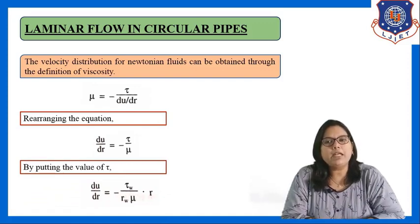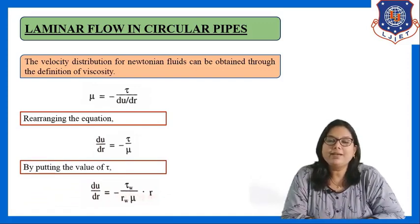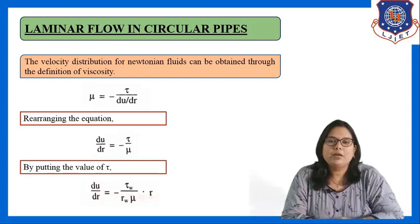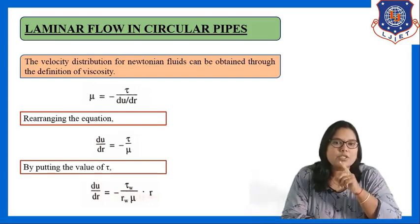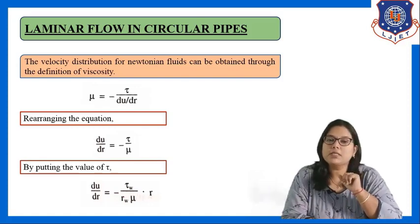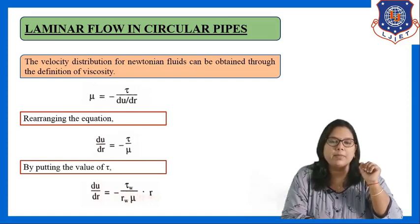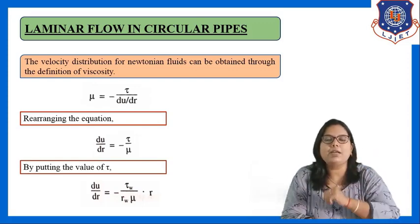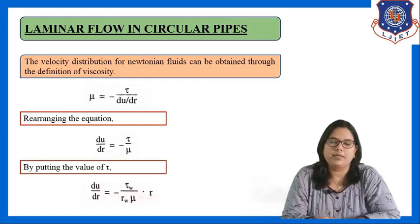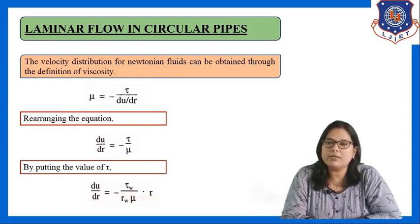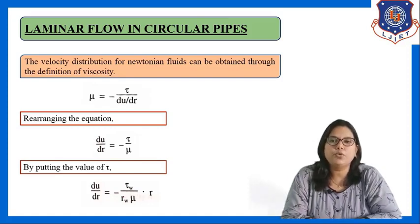Now by putting the value of tau from the equation derived in the previous derivation: tau equals tau_w upon r_w into r, which comes from the relation tau_w / r_w = tau / r. So substituting that, du/dr equals minus tau_w upon r_w into r.